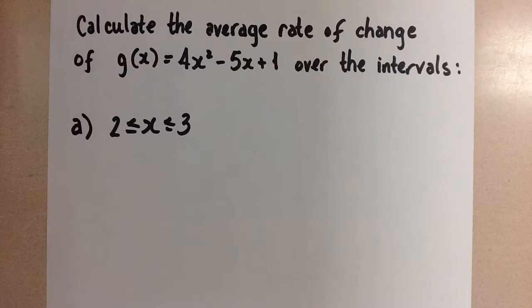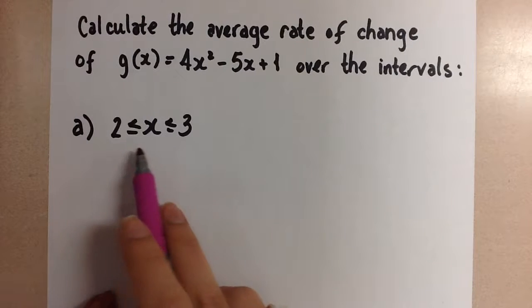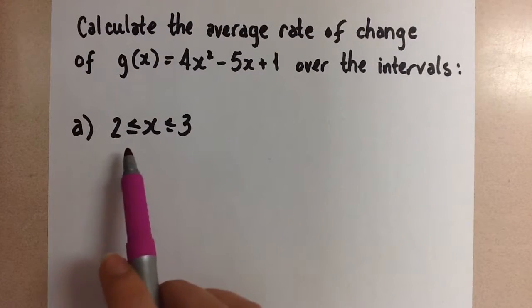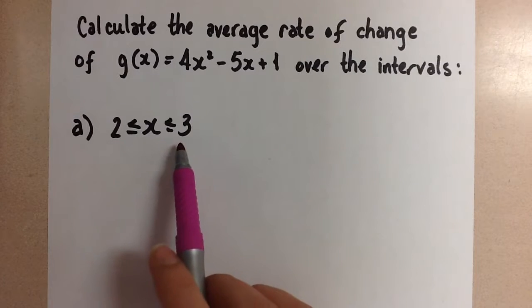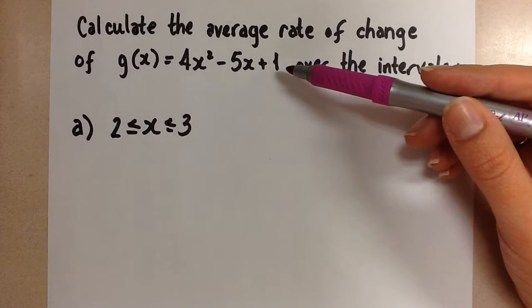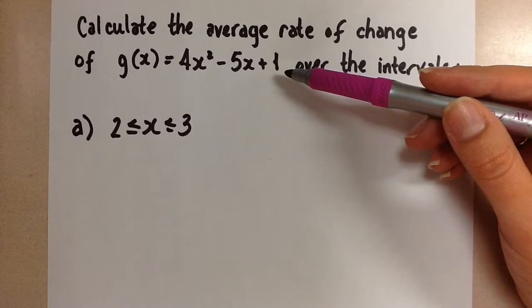To do this we have to think about the secant line that passes through the two points on either end of the interval. For example, we have the interval between 2 and 3 with this equation that represents a parabola. So this is a curve.